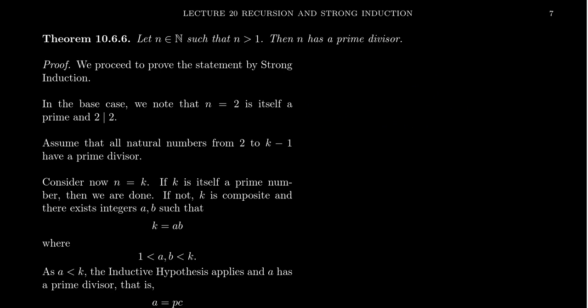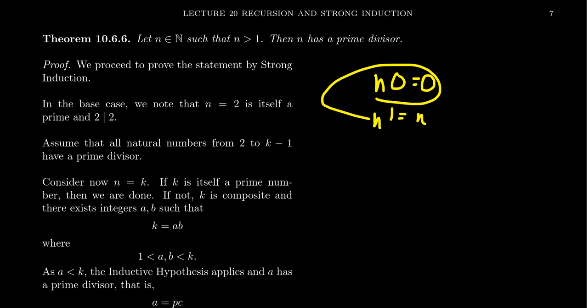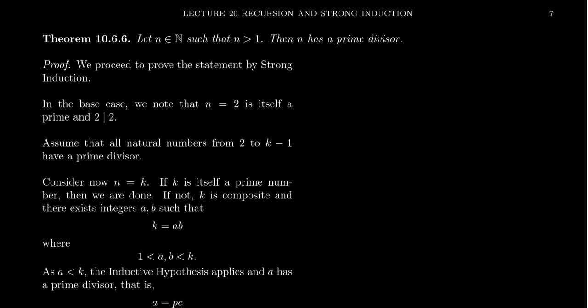Let's demonstrate that with two proofs about divisors. First: let N be a natural number such that N is greater than one. We exclude zero and one because their divisibility traits are different — zero has the property that anything times zero equals zero, and one is the multiplicative identity. So we focus on positive integers greater than one: two, three, four, five, etc. It turns out that every natural number greater than one has a prime divisor, and we can prove this by strong induction.